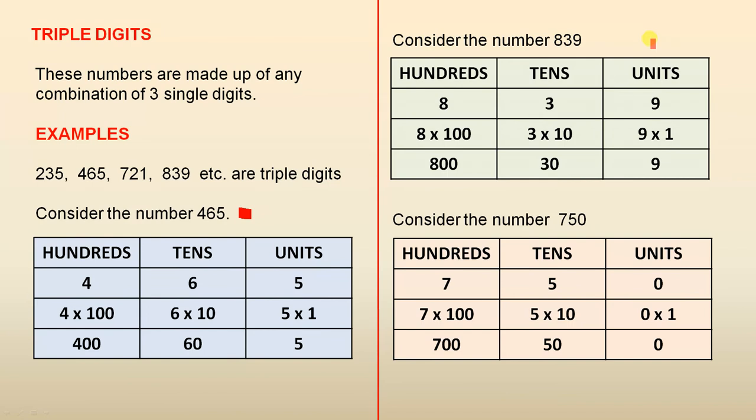Consider the number 839. The 9 is 9 units, which is 9. The 3 is 3 tens, which is 30. And the 8 is 8 hundreds, which is 800. 800 plus 30 plus 9 is 839.